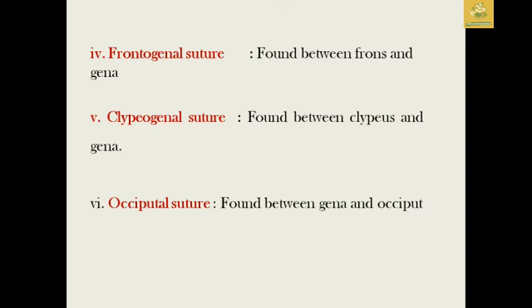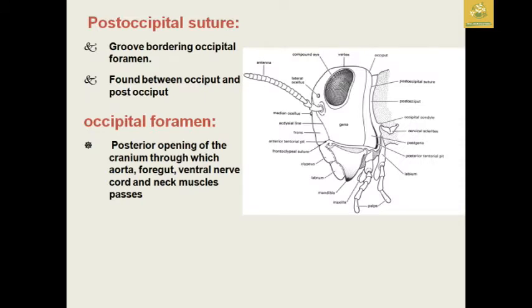The frontogenal suture is found between the frons and the gena. The clypeogenal suture is found between the clypeus and the gena. The occipital suture is found between the gena and the occiput in the insect head. The postoccipital suture is found between the occipital foramen and the postocciput, where the foramen formation is located.